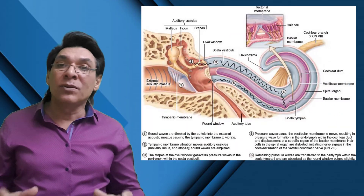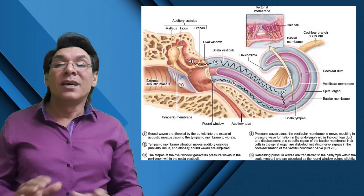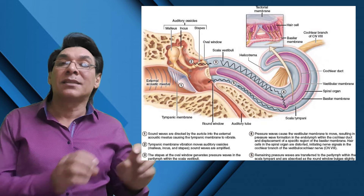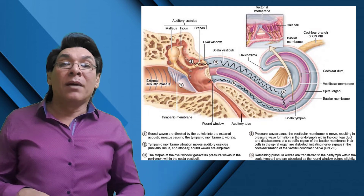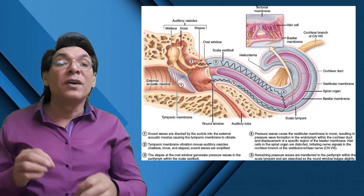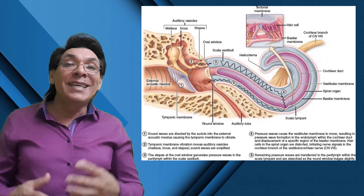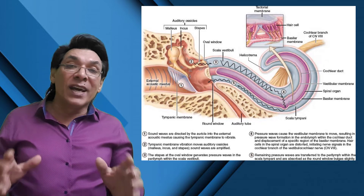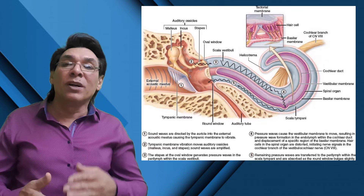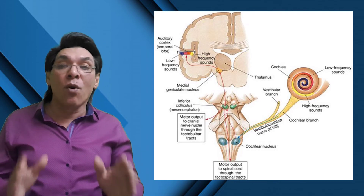Sound pathway summary: auricle → external auditory meatus (external ear) → tympanic membrane → malleus → incus → stapes → through oval window → perilymph of scala vestibuli → vibration of vestibular membrane → endolymph of cochlear duct → hair cells of the organ of Corti. Then the impulse travels along the cochlear branch of the vestibulocochlear nerve to the medulla, to the thalamus, and to the primary auditory cortex of the temporal lobe.